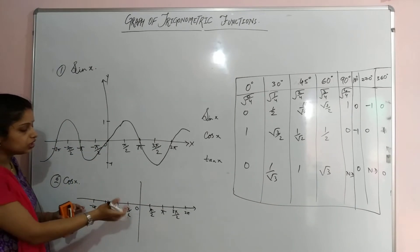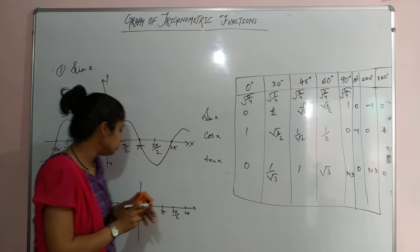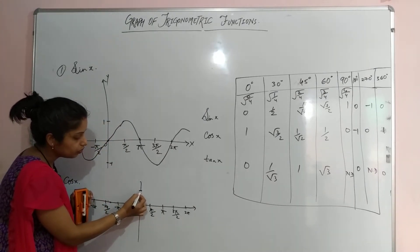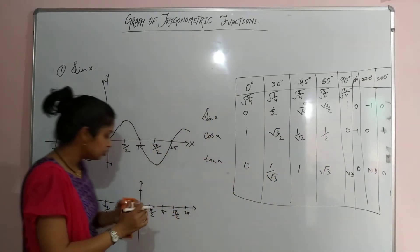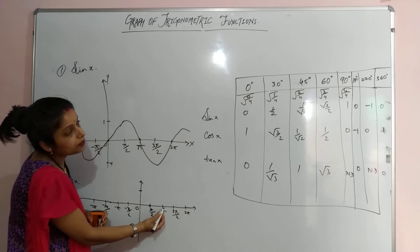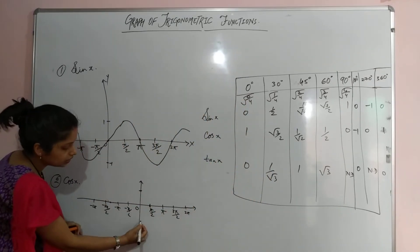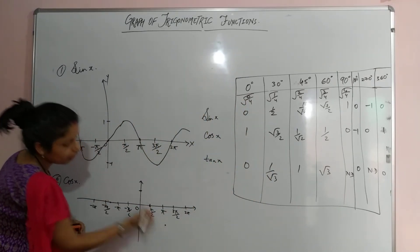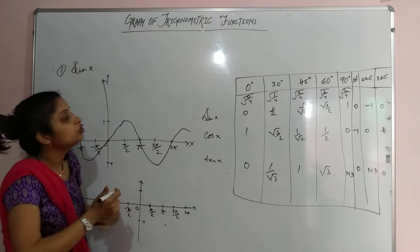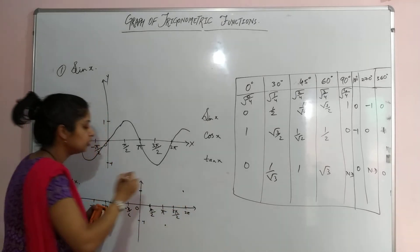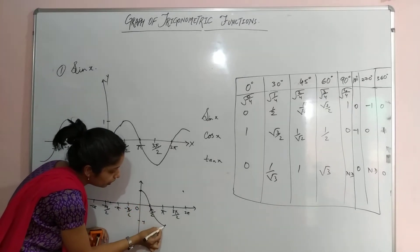At x = 0, cos is 1, so the graph starts at 1. At π/2, cos is 0. At π, cos is −1, so the point is below the axis. At 3π/2, cos is 0 again. At 2π, it is back to 1. Join these points to form the cosine curve.